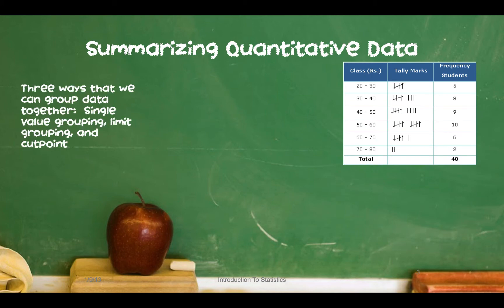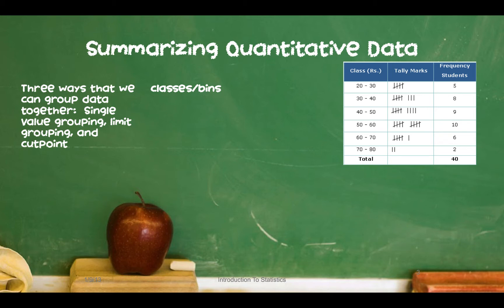Summarizing quantitative data can be done in three ways: single value grouping, limit grouping, and cut point grouping. The idea is that we formulate these things called classes — a lot of times you may hear me use the word bins, but you can also think of these as buckets. If you take a look at the picture, we can see classes like 20 to 30, 30 to 40, 40 to 50. Any data value that lies between 20 and 30 will fall into that first bucket, and so forth. The idea is how do we form these buckets, and once we have them, we count how many values fall into each one using tally marks.